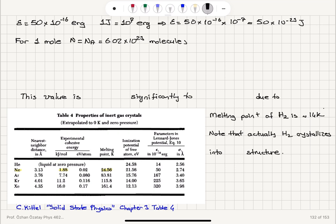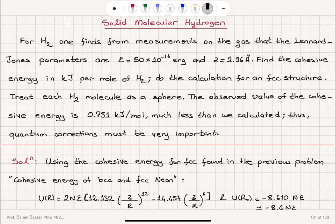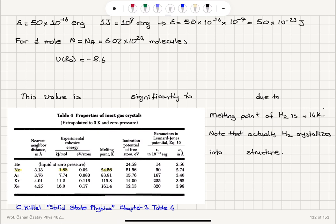We can calculate the cohesive energy at equilibrium separation. U(R₀) = -8.6Nε = -8.6 × 6.02×10²³ × 50×10⁻²³.